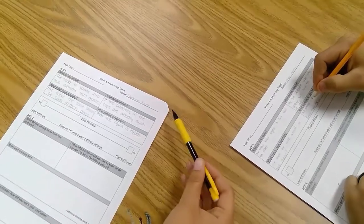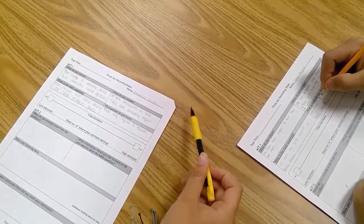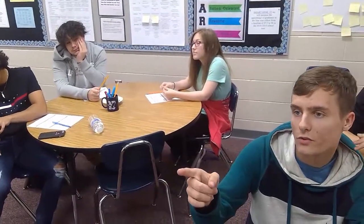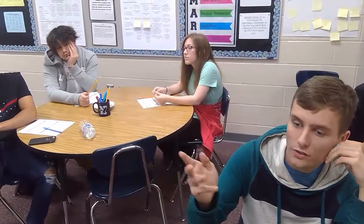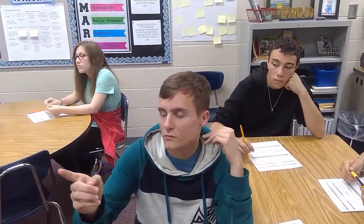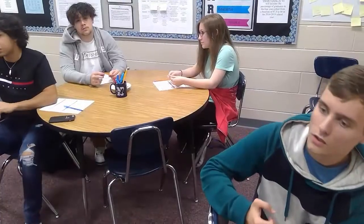Once students have come to consensus on the question to answer and made an estimated guess, Act 2 is where students gather information to help them model the context and find a solution to their question. The height of the cup, the height of the liquid, and also the diameter, the area of the cup's width and length.